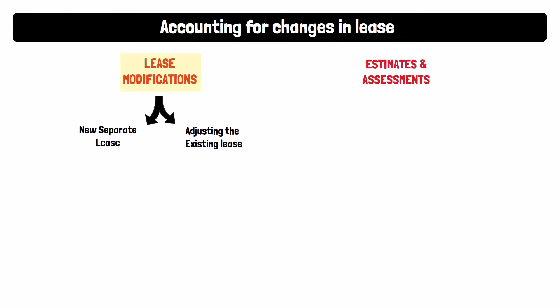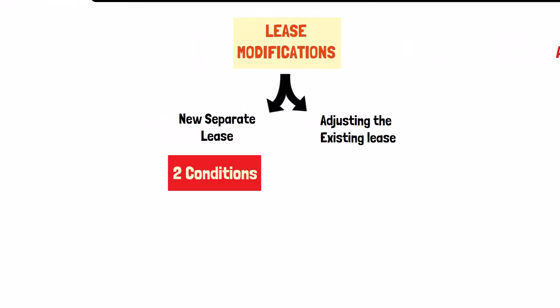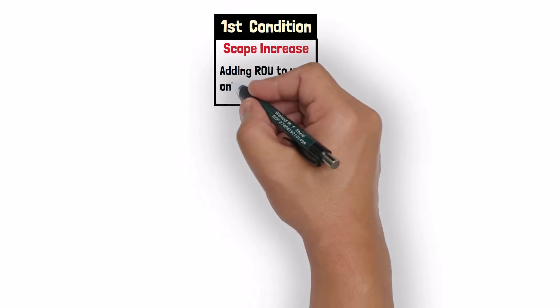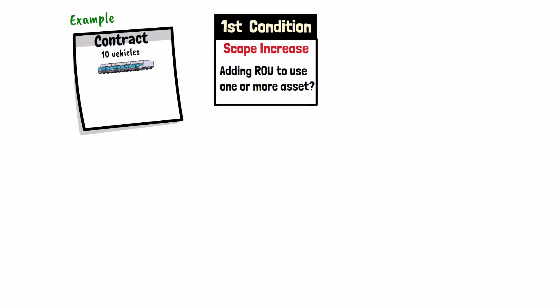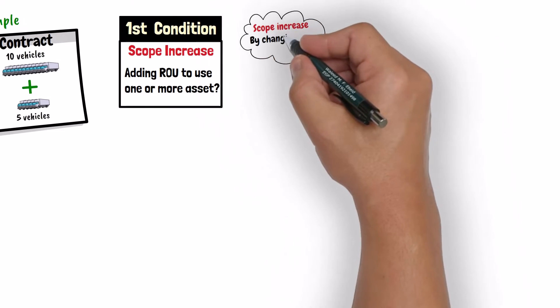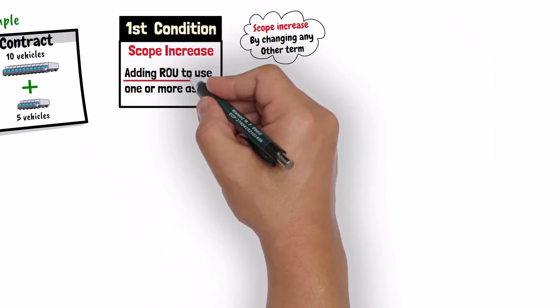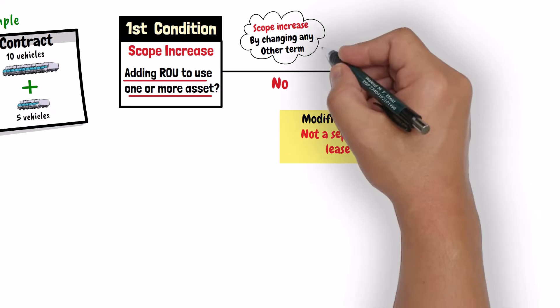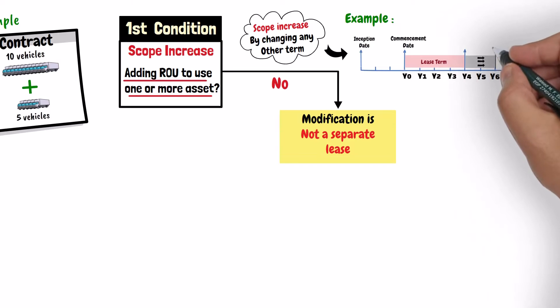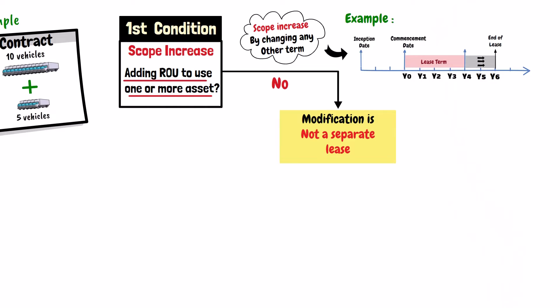A lease modification should be accounted for as a new separate lease if both of the following conditions are met. First, the modification increases the scope of the lease, and that increase should be by adding the right to use one or more underlying assets. An example is when the modification increases the number of leased vehicles from 10 to 15. A modification that increases scope by extending the contractual lease term, rather than adding a right to use an additional asset, is not accounted for as a separate lease.